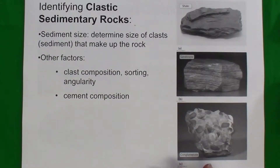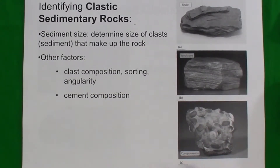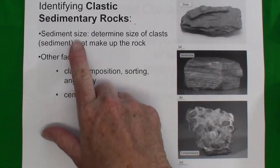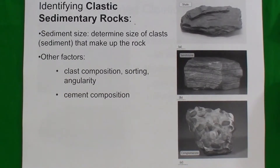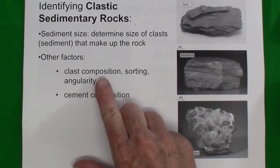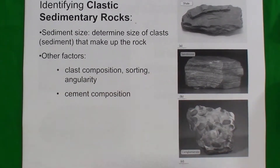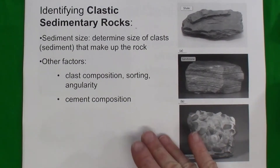In summary, the identification of clastic sedimentary rocks depends primarily on the size of the sediment within the rock. Other factors include the composition of the clasts, the degree of sorting and angularity, and also the composition of the cement that holds the clasts together.